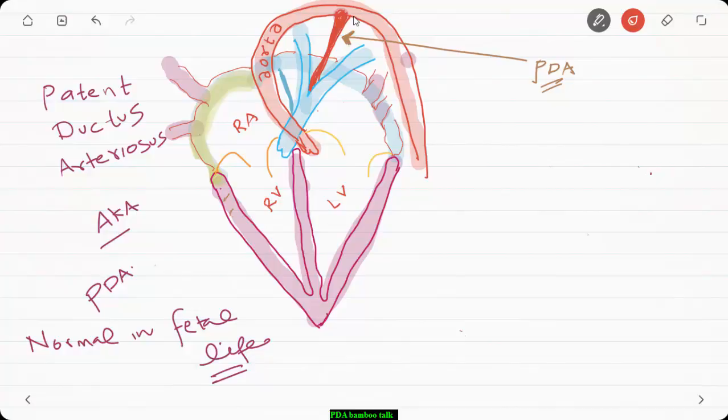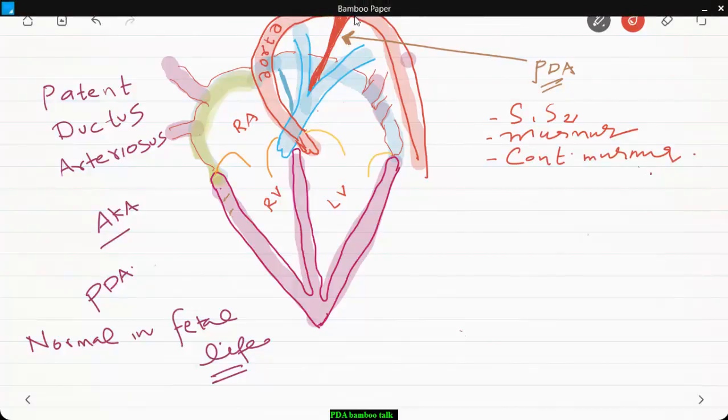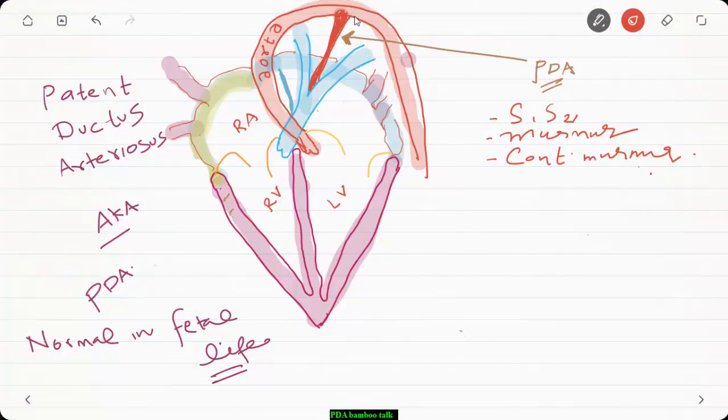When you're listening to patients with Patent Ductus Arteriosus you'll often hear a murmur. A murmur is an extra noise in addition to normal S1 and S2. You get a continuous murmur - the reason is the flow is continuous from systemic circulation throughout systole and diastole. The best place to listen for this is below your left clavicle.